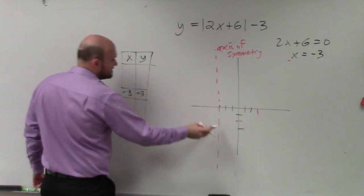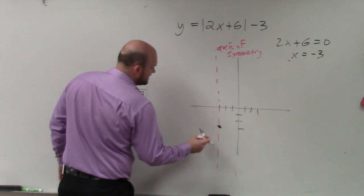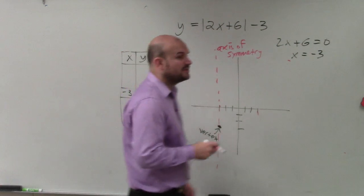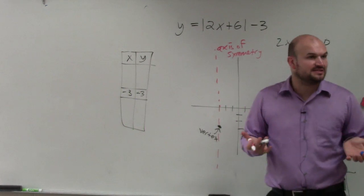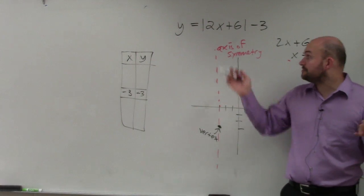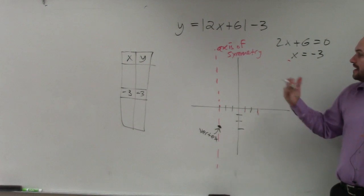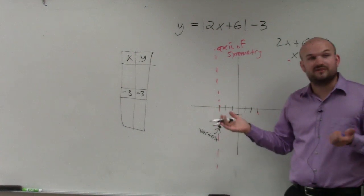So I go to negative 3, down negative 3. That is my vertex. So whenever you're graphing using the table, that's the first two steps you're always going to do. Find your axis of symmetry by setting whatever's in your absolute value to 0 and solving for x, and then plugging in that value to find the y coordinate, which is your vertex.